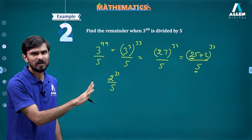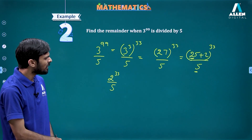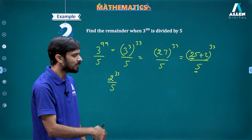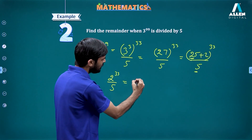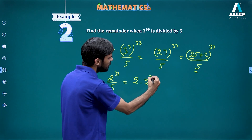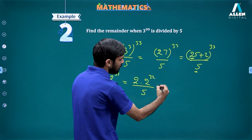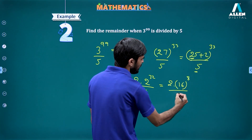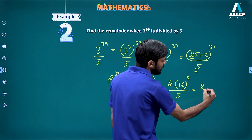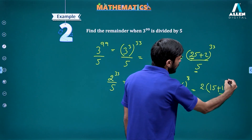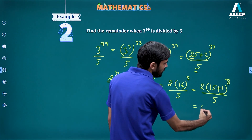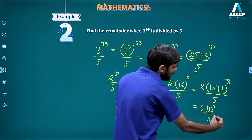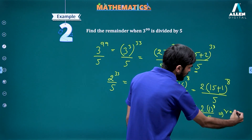For 2^33 divided by 5, I write it as 2 times 2^32 divided by 5, which is 2 times 16^8 divided by 5. Now 16 equals 15 plus 1, so this becomes 2 times (15 + 1)^8 divided by 5. Since 15 is divisible by 5, we get 2 times 1^8 divided by 5, giving remainder equal to 2.